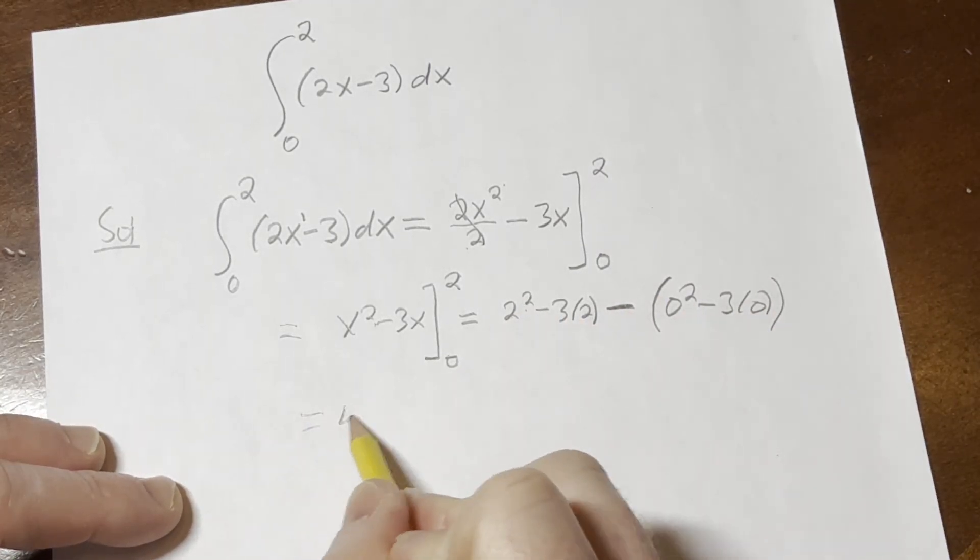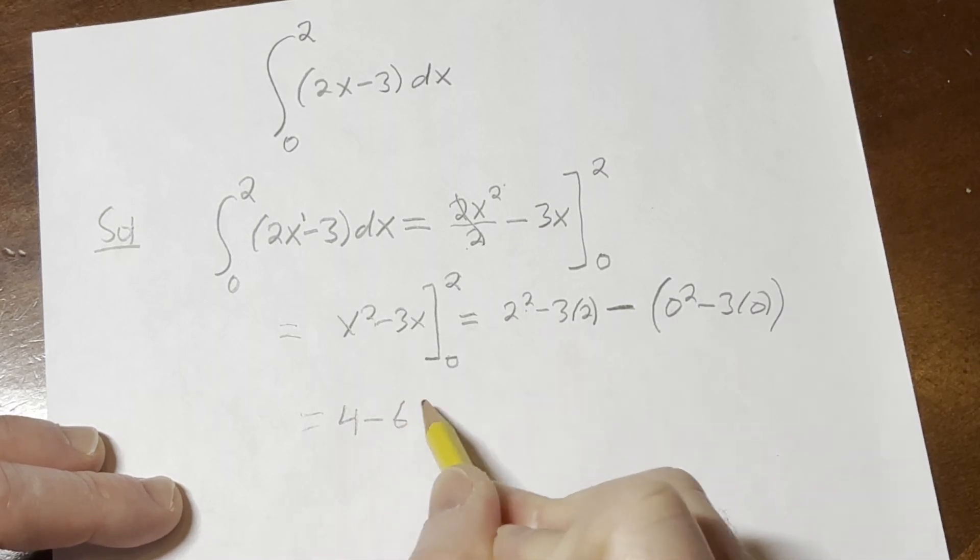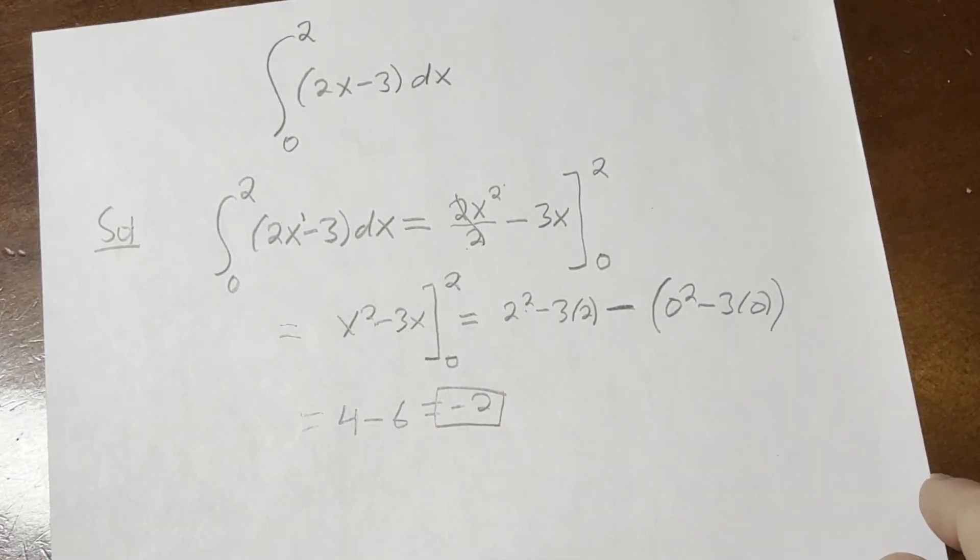2 squared is 4, minus 3 times 2, which is 6, and so you get negative 2. And that would be the final answer. Take care.